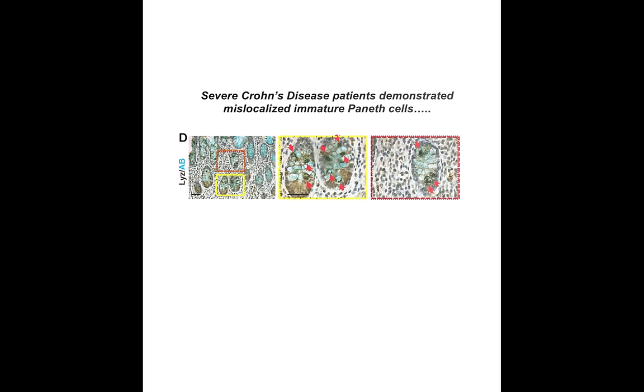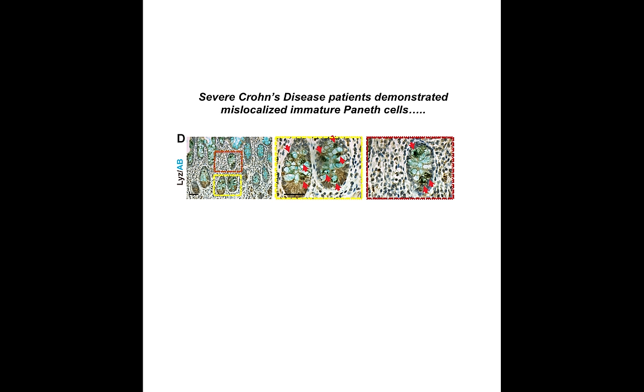Interestingly, panel D shows that double lysozyme and Alcian blue staining of moderate to severe Crohn's disease patient samples demonstrated a large number of mislocalized immature Paneth cells.